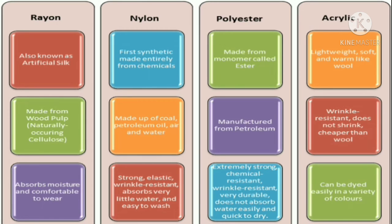Now let's see the characteristics of polyester. Polyester is made from a monomer called ester and is manufactured from petroleum. It is extremely strong, chemical resistant, wrinkle resistant, and very durable. It does not absorb water easily and is quick to dry.